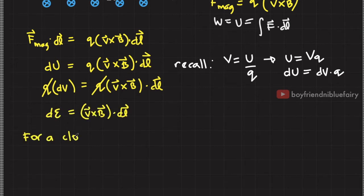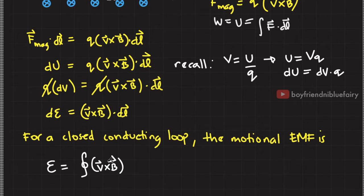So this cancels out. Since this potential represents the induced EMF, I'll just replace this with this symbol. So for a closed conducting loop, the motional EMF is the integral of V cross B dotted to dL. This works for closed conducting loop of any shape.